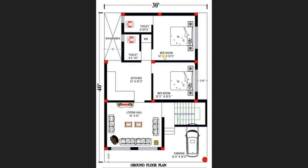On the right side you can view another bedroom of size 12 feet 3 inches by 12 feet. This master bedroom is attached with a toilet of size 8 feet by 4 feet 6 inches. Now I am returning back to the kitchen area.